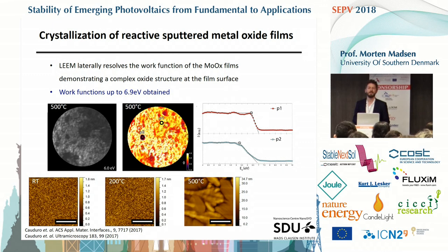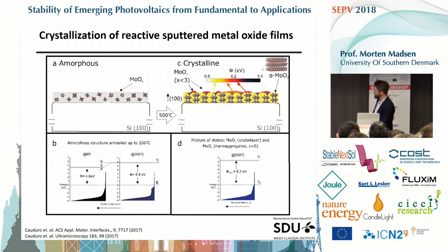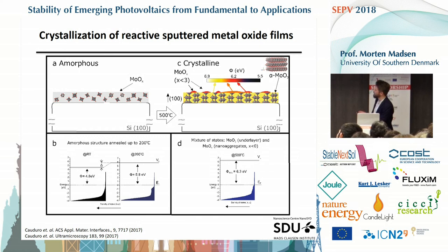We also see from XPS that we have this reduced composition when we heat it up to very high temperatures. So we do crystallize the surface. This complex oxide has a high work function. The picture looks something like this: we go from amorphous, form this very crystalline surface and bulk. The background in the LEEM image has work functions close to 6.9 eV that you see for in-situ prepared metal oxide. Then we have these nano-aggregates on top that are slightly reduced in composition and show a little bit lower work function. In either case, it's still a high work function metal oxide that should be useful for hole contacts.